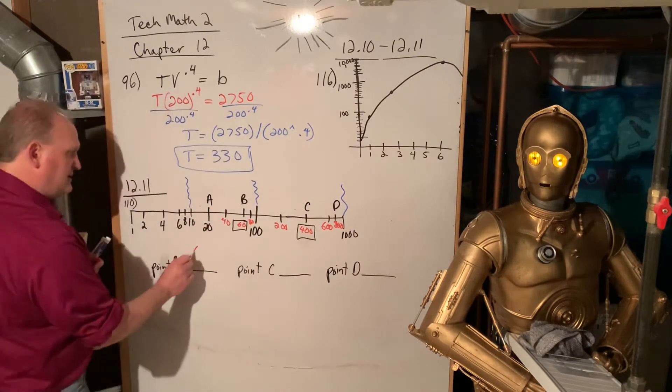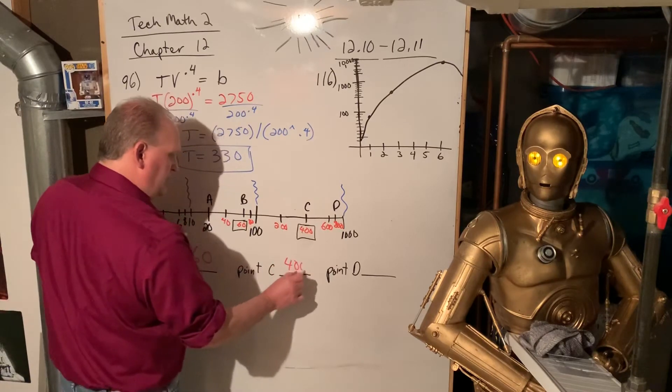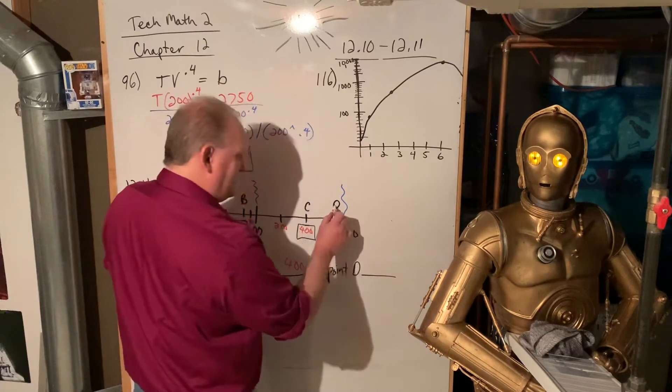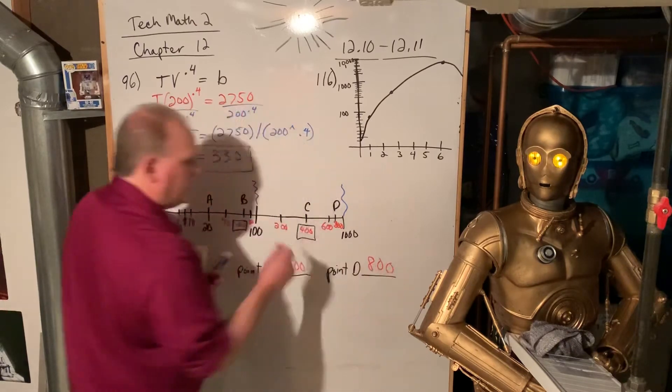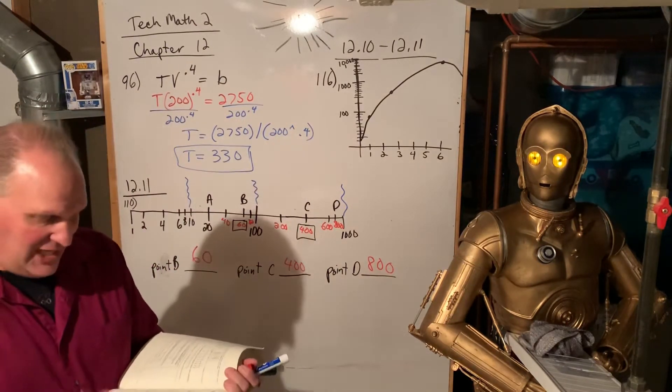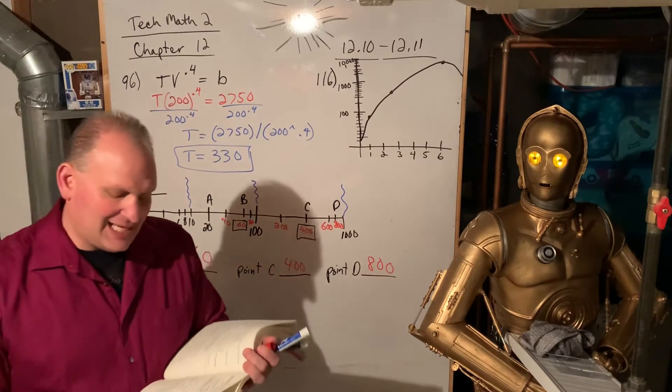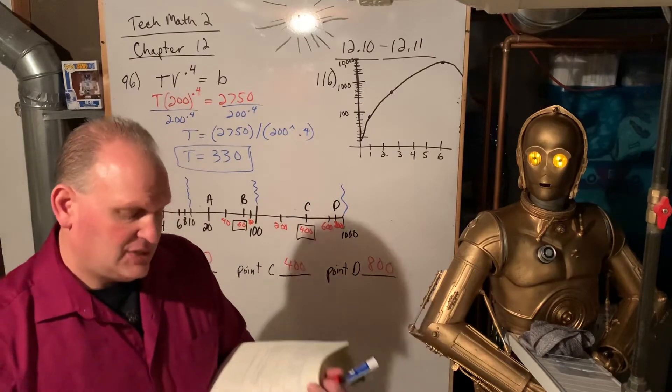So it's weird because the scale changes with each little different section. It says on the three-cycle scale below, so they're changing up the scale. So you got to really pay attention on that one.